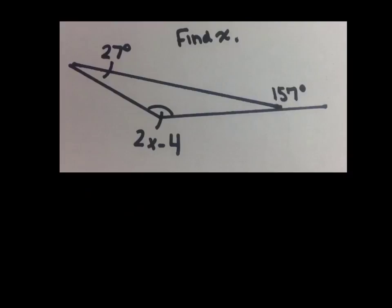In our final example here, we're asked again to find the measure of X. So what we can do is use what you know about the sum of the remote interior angles to figure out what X equals. We can write an equation that says 27 plus 2X minus 4 equals this exterior angle of 157. Let's combine terms.